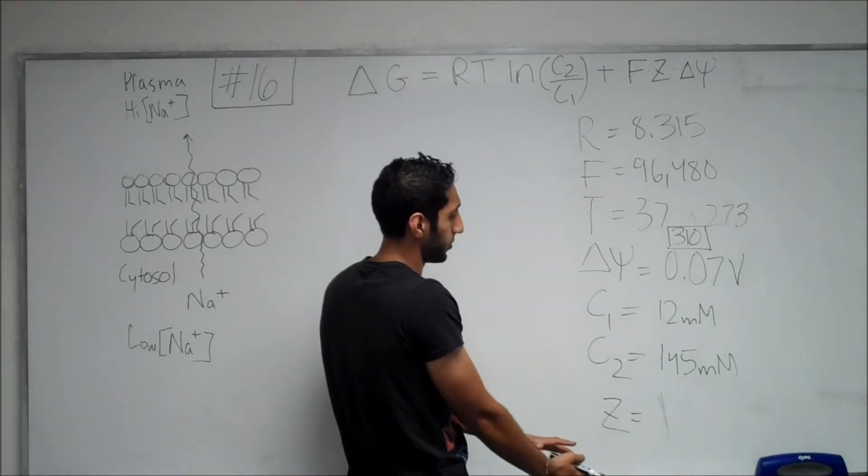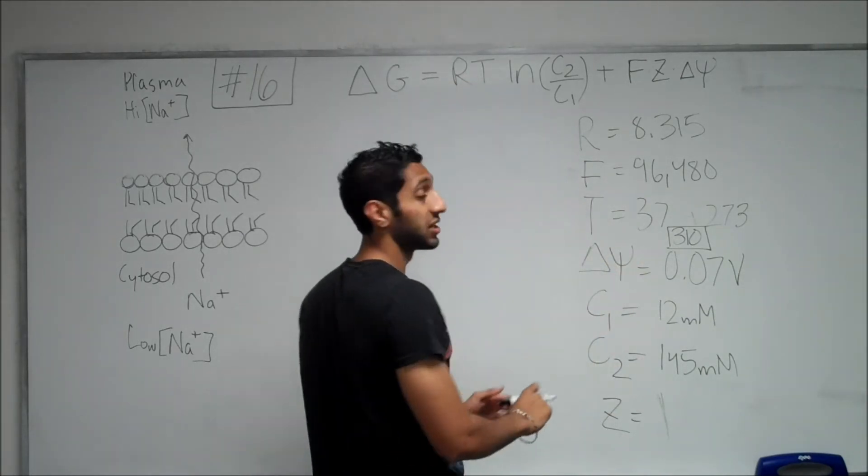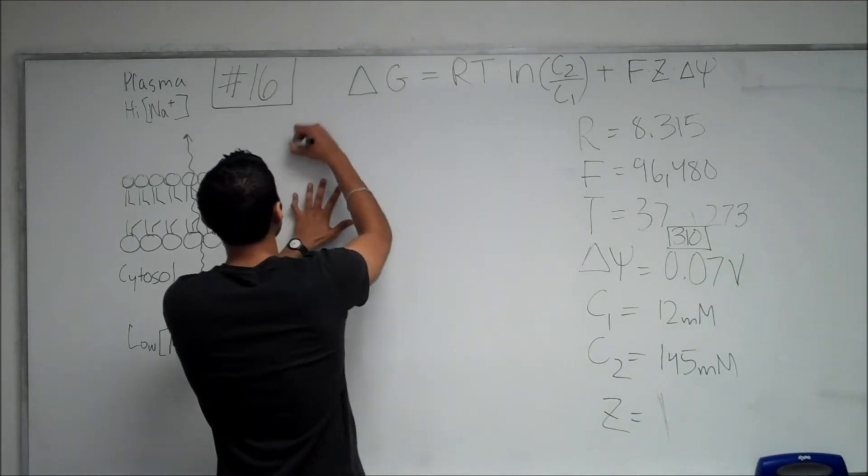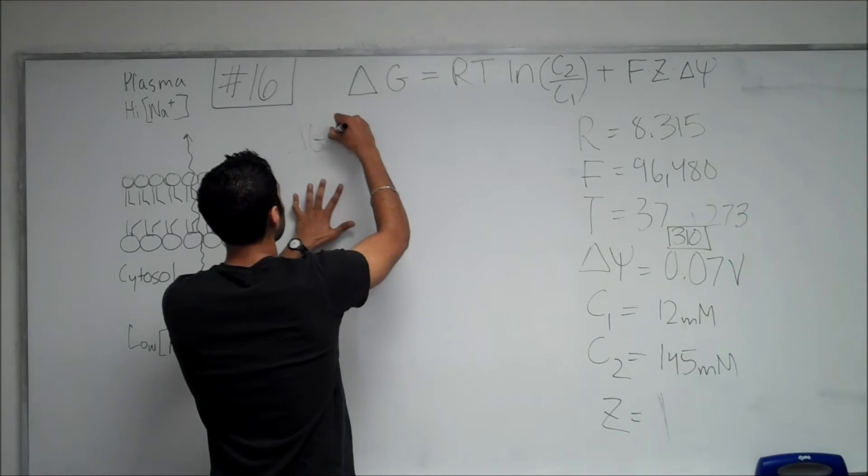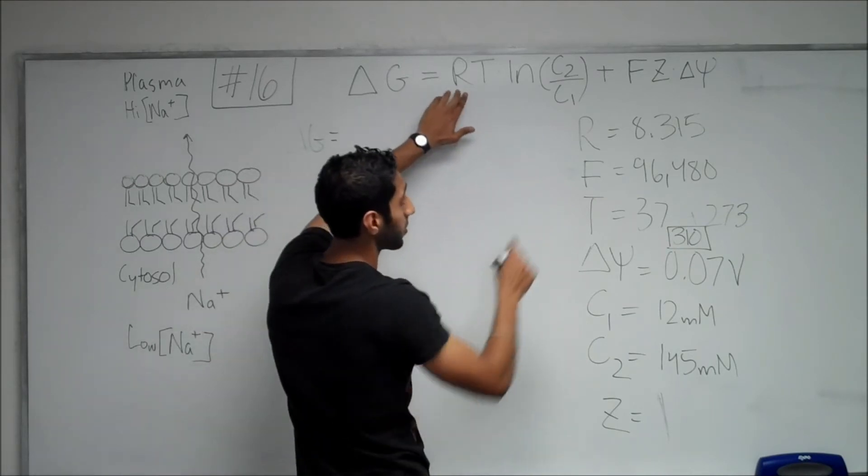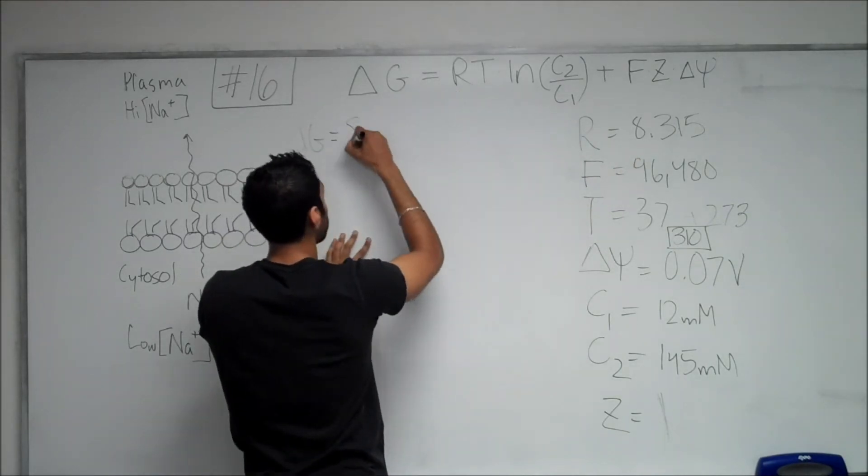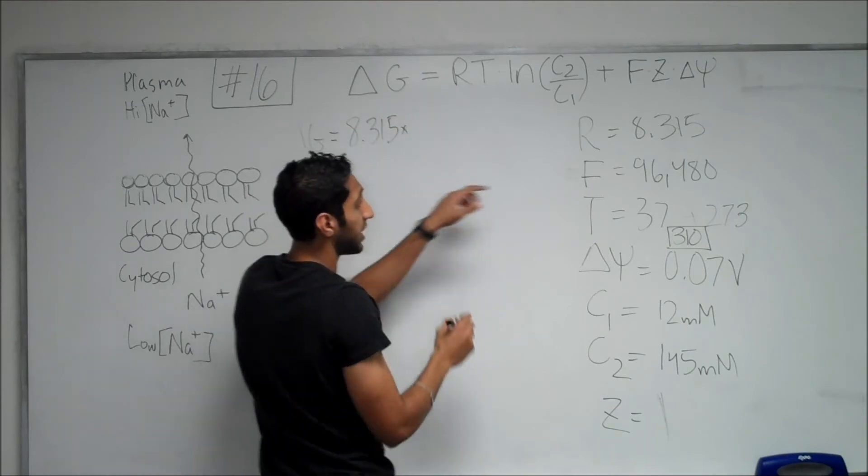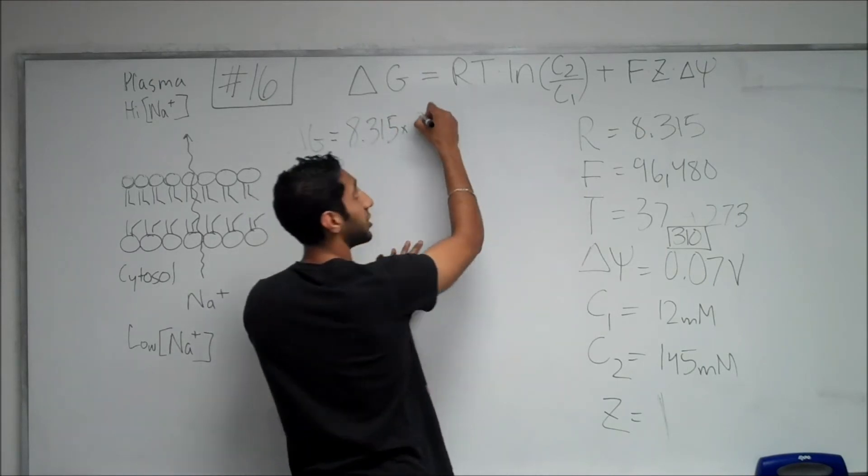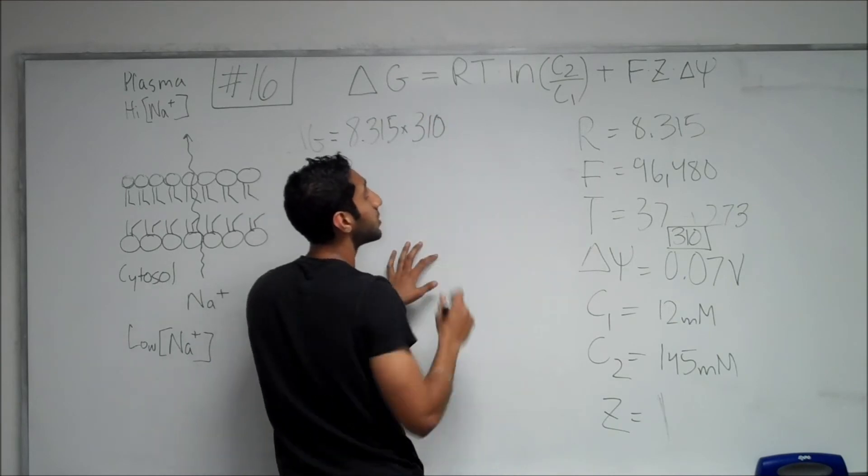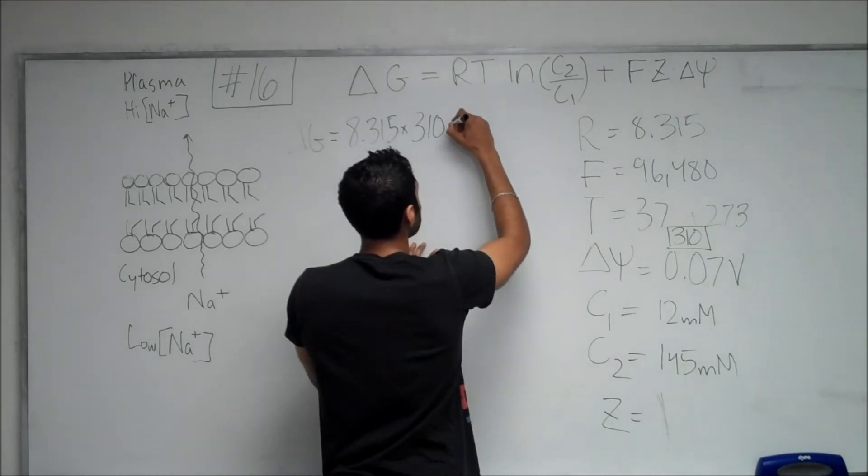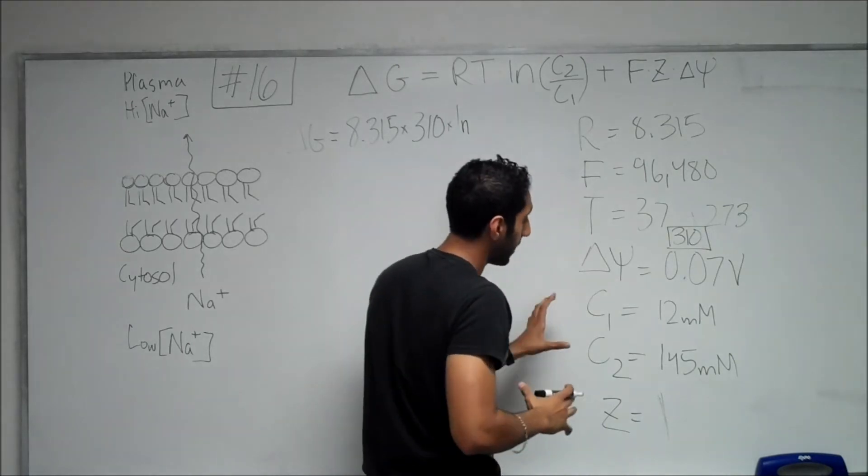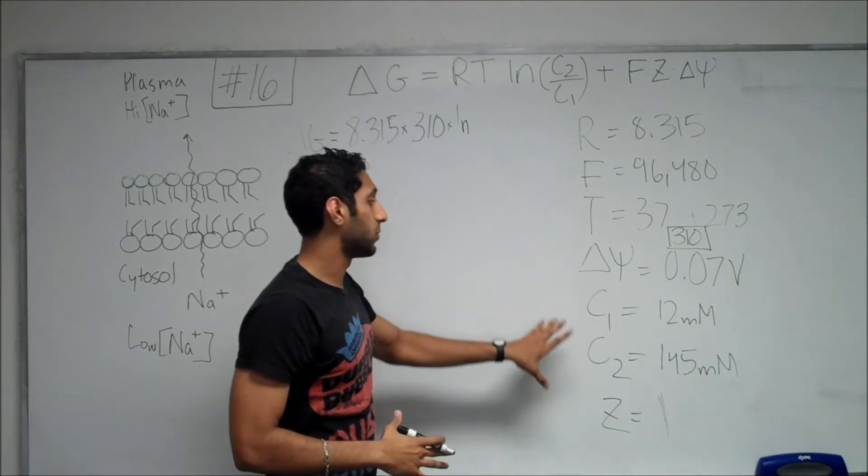So, now that we have all of our values in the correct format, we can just go ahead and plug them into the equation. So, delta G is free energy, and that equals R, which is 8.315, times temperature, which is 310 Kelvin, and then times the natural log of C2 over C1.